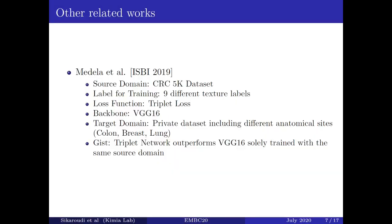As related work, Medela employed triplet networks on colorectal cancer slides as a source domain and utilized their model to extract features of healthy and tumorous colon, breast, and lung slides as a target domain. For this purpose, they utilized a VGG16 model as the backbone of their triplet network, while they replaced the last fully connected layer with a more compact version. They used labels provided by pathologists in the source domain to create triplets. Furthermore, due to the mismatch between the properties of the source and target domain, images were adjusted through rescaling. The gist of their work was a triplet network outperforms VGG16 solidly trained with the same source domain.